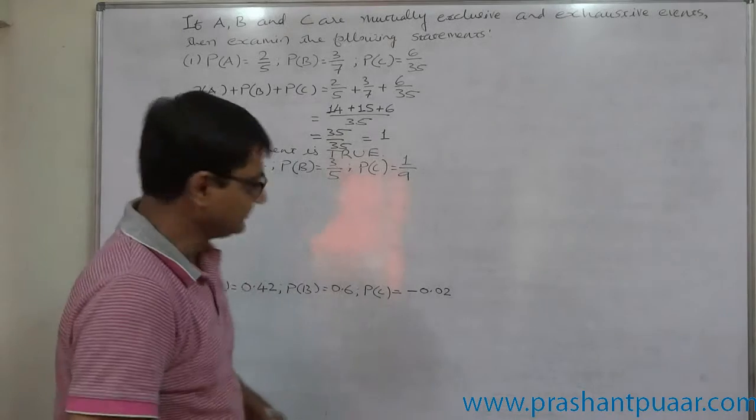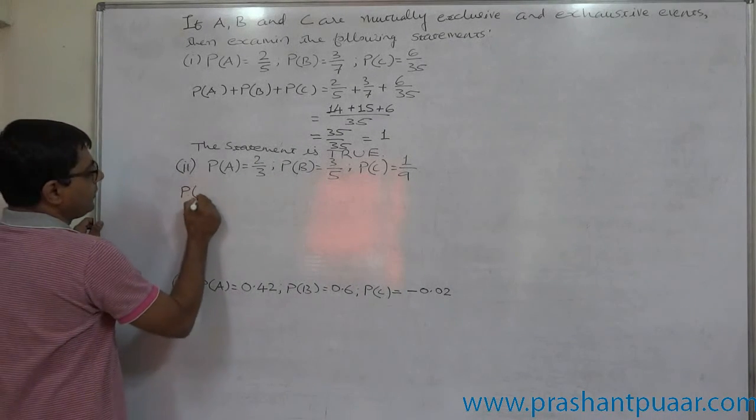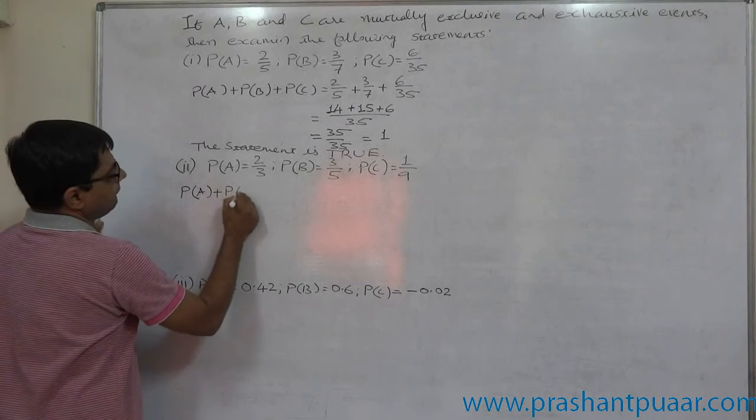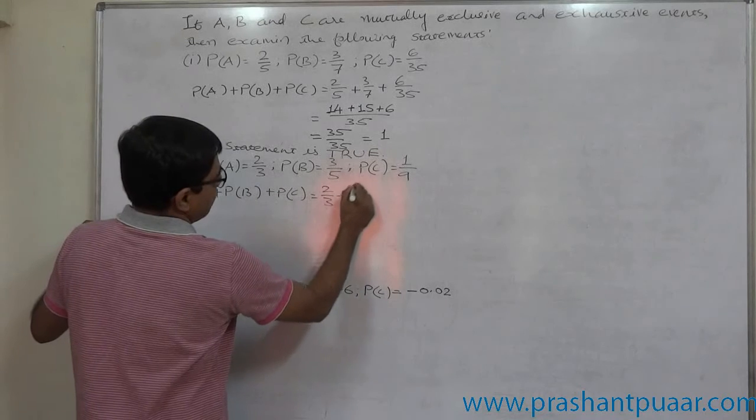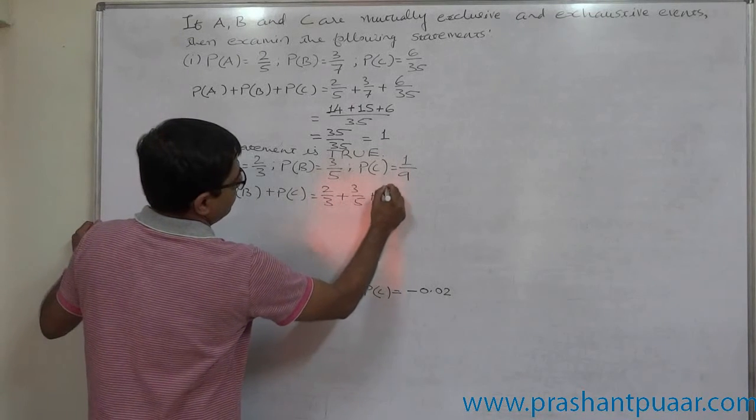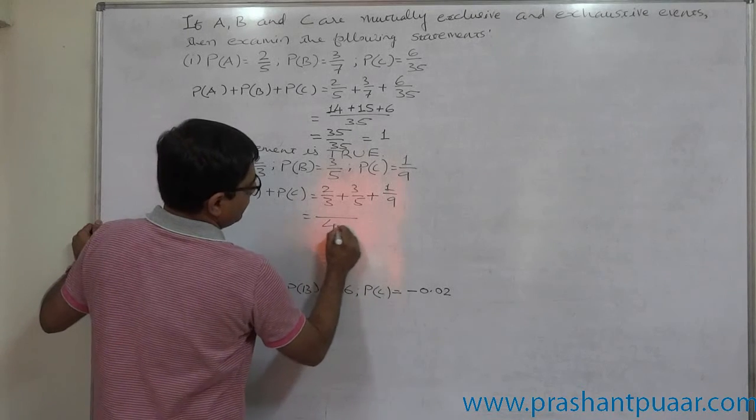In the second case, if we go for P of A plus P of B plus P of C, it is two by three plus three by five plus one by nine. We have to take LCM of 45.